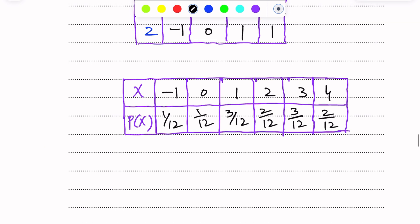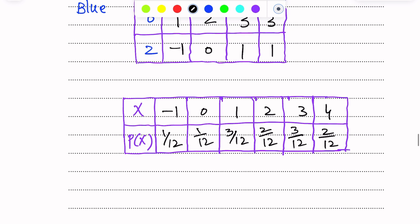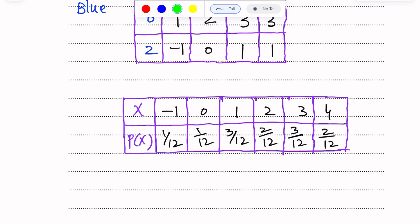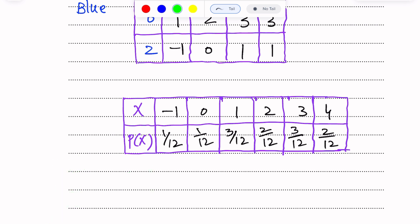Now we will check if the probability distribution table is correct. We add all the probabilities: 3 plus 2 is 5, plus 2 is 7, plus 3 is 10, plus 1 is 11, plus 1 is 12 over 12. The sum of probabilities is 1, so this probability distribution table is correct.